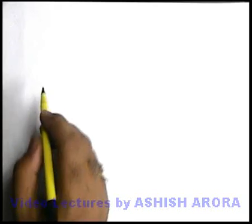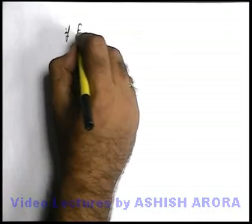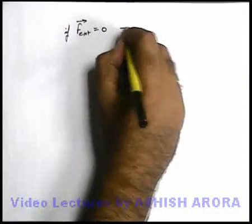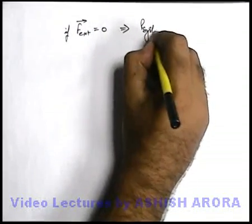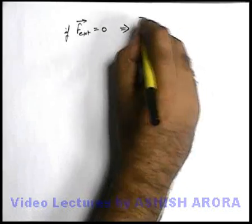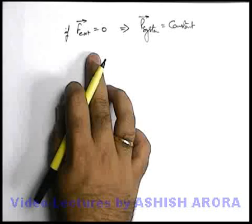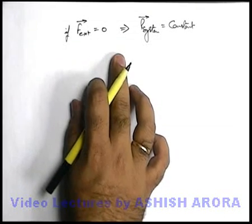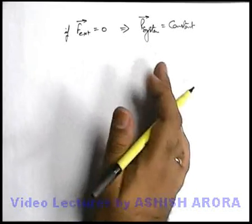As we have just seen, if no external force is acting on a system of particles — that is, if F_external is zero — this implies the system momentum will remain conserved or constant. This is what we term as the law of conservation of momentum.